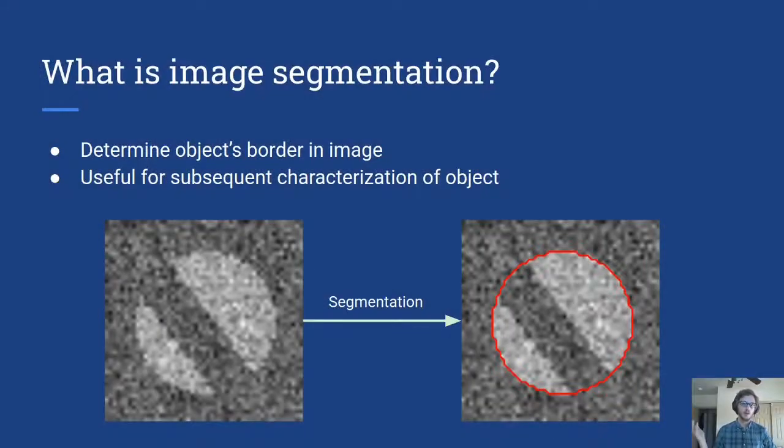So what is image segmentation? Image segmentation means to find the boundaries of an object in an image. So if we have an image like the one on the left, which is a circle with a piece cut out, maybe our objective is to find the boundary of the original circle. That's what's shown on the right in red.